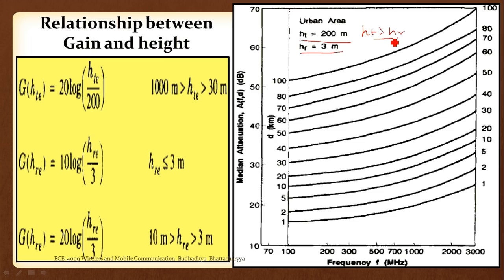This is a good assumption since HT is sufficiently greater than HR, which is always the case — the transmitter is always at a higher height than the receiver. In the graph, the X-axis is frequency and the Y-axis shows median attenuation loss and distance. He went from one point to another as separation increased, simultaneously changing the frequency from around 100 MHz to almost 3000 MHz.